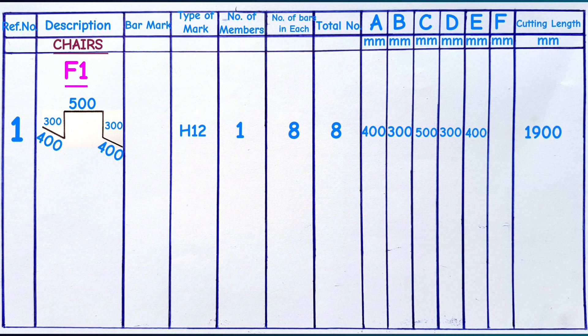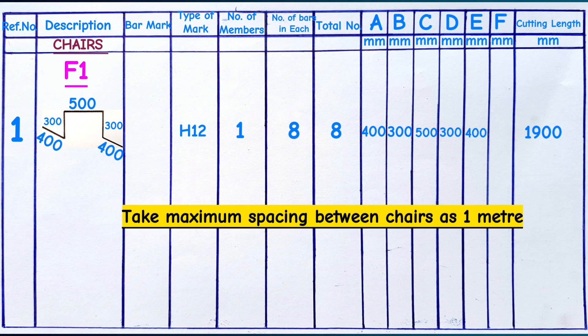There is no standard spacing between chairs or separators, but they must be arranged so they fully support the main reinforcement bars. You can take the maximum spacing as 1 meter.